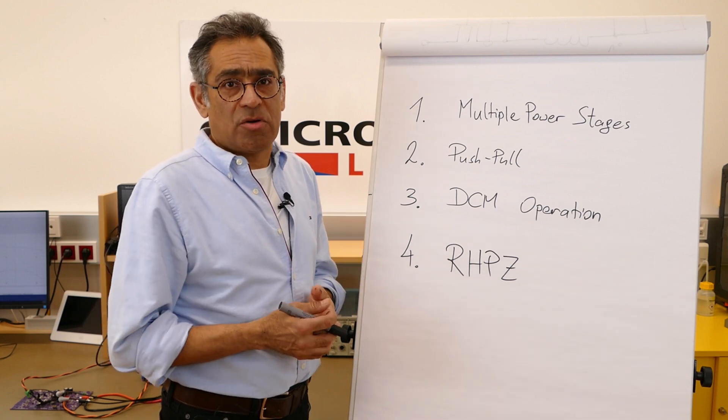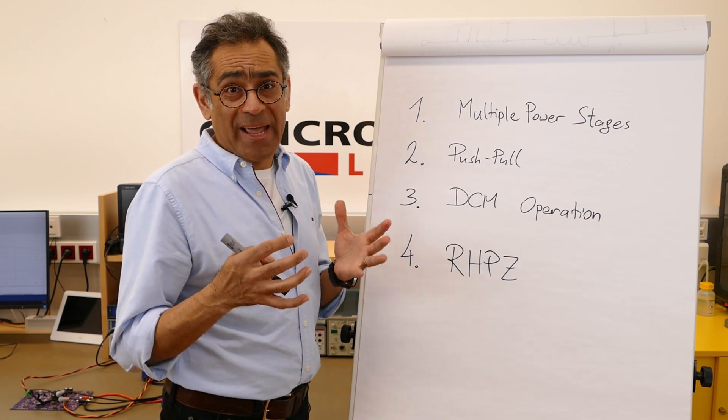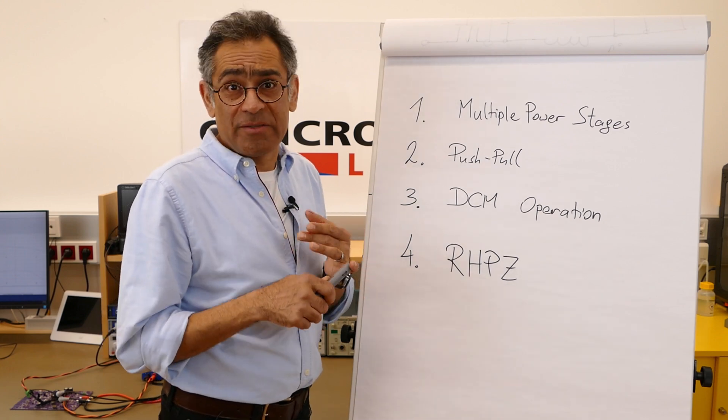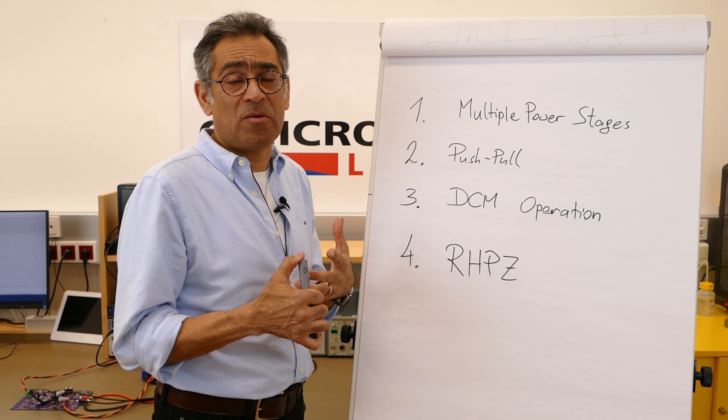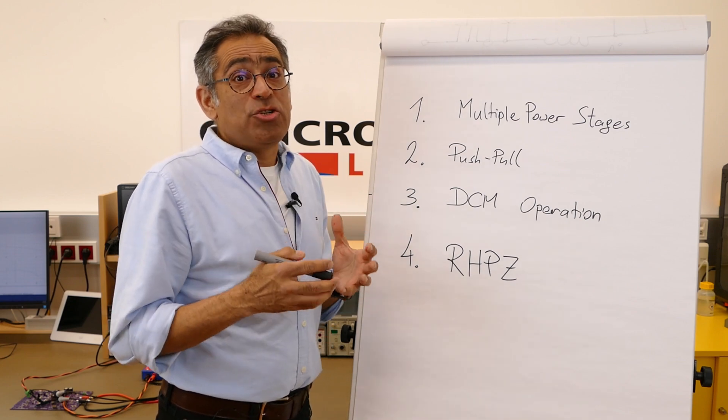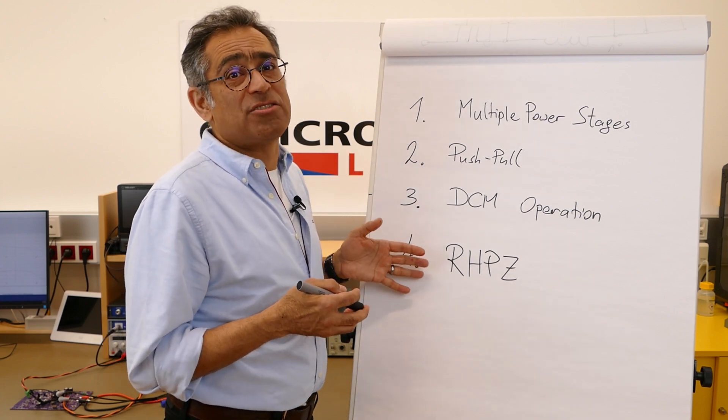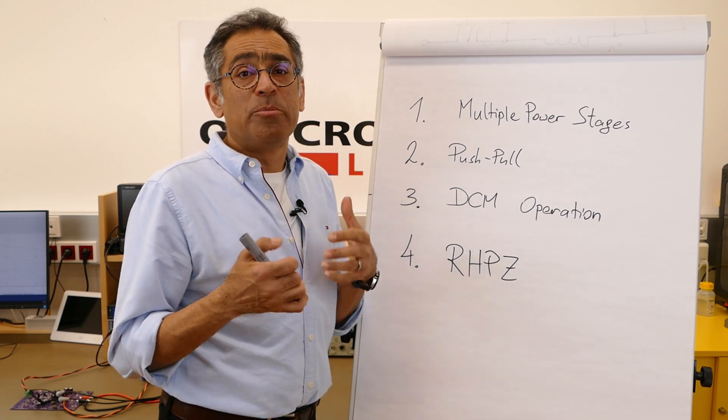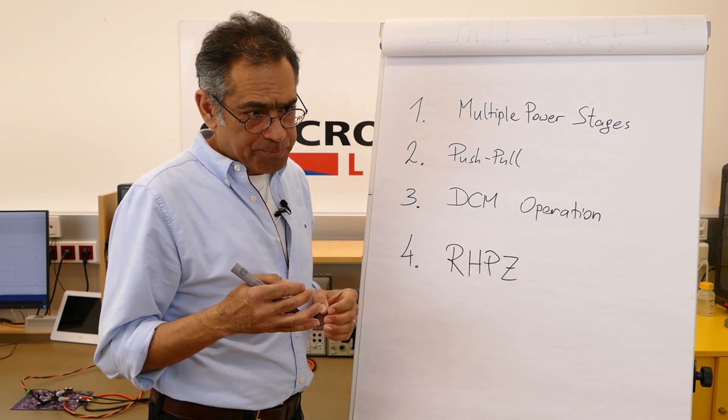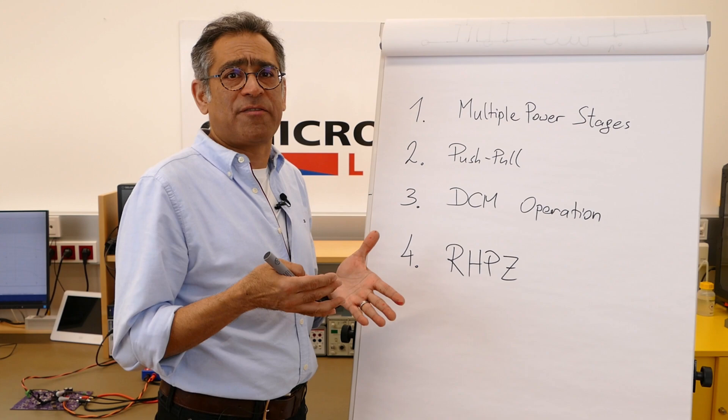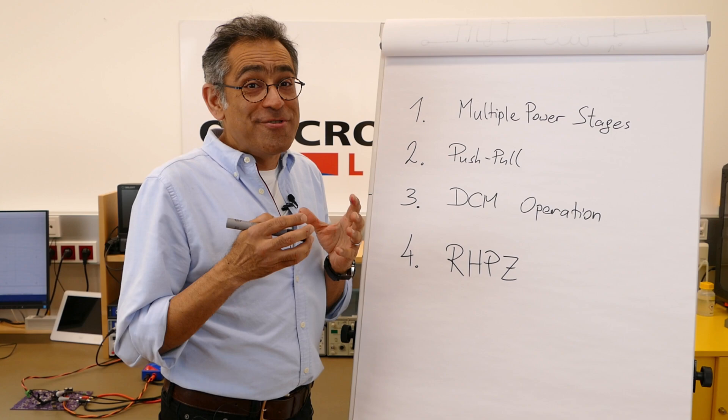So when do we use which one of these control methodologies? Current mode, it's a little bit of a pain actually. The current sensing is difficult and it's invasive. The layout needs to be very very clean, you need slope compensation, you need leading edge blanking and so on. However, there are times that you just do not have a choice and you have to use current mode. The first one is multiple power stages. So if you've got interleaving and you need to be current sharing, then you really don't have a choice and you have to use current mode. For push-pull converters, you really have no choice, you have to use current mode.